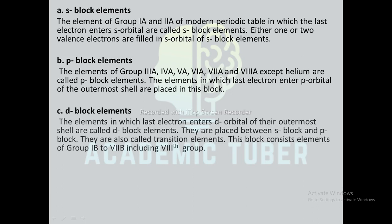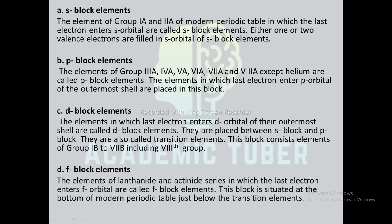D block elements: the elements in which the last electron enters the d orbital of their outermost shell are called d block elements and they are placed between the s block and p block. They are also called transition elements and this block consists of elements from group 1B to 7B including the 8th group. F block elements: the elements of the lanthanide and actinide series in which the last electron enters the f orbital are called f block elements. This block is situated at the bottom of the modern periodic table just below the transition elements (d block elements).